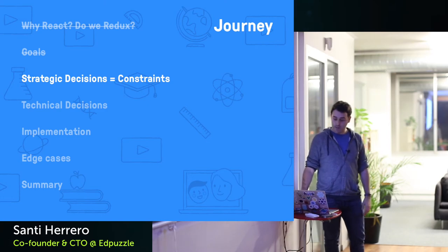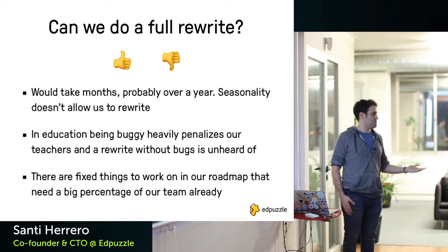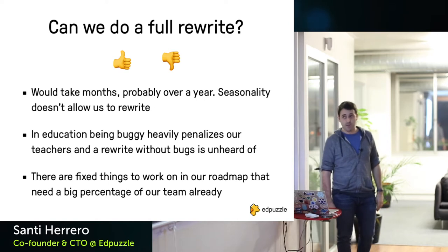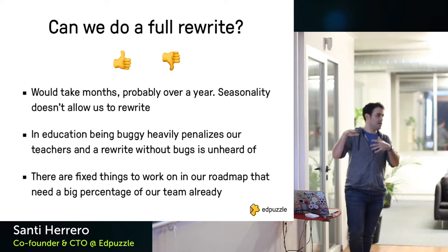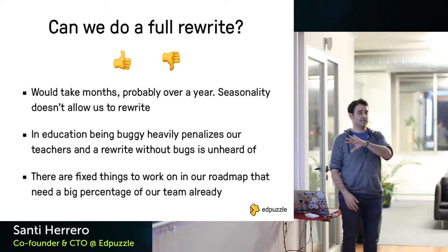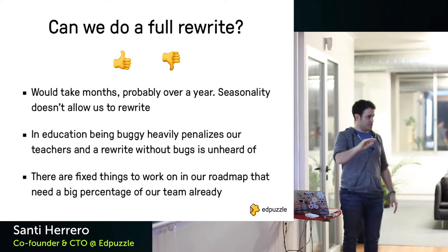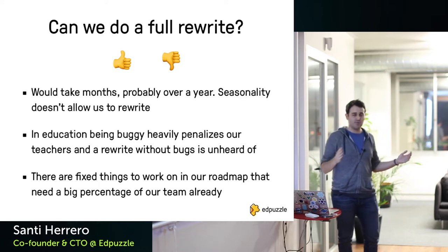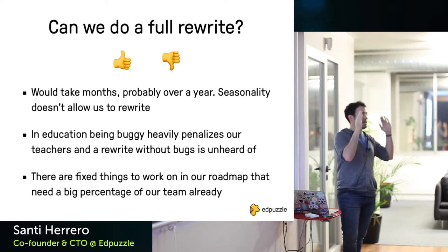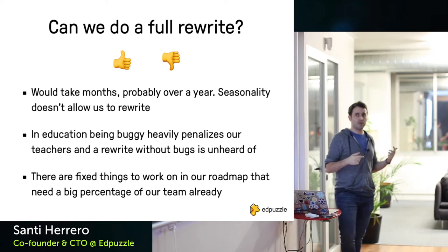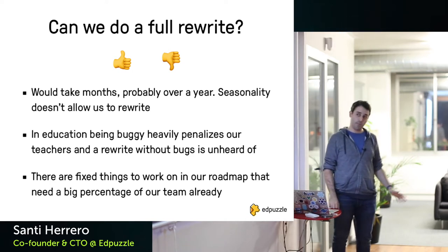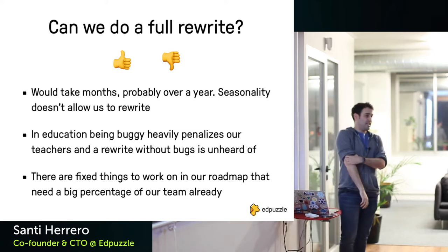Strategic decisions: two questions. First, can we do a full rewrite? We all know the answer is no. It would take months, and the seasonality of the education system doesn't allow us to stop for that long. We have heavy traffic during semesters — September to January, then January to June — and in summer only teachers use the platform, no students. There's no easy window to fit a full rewrite without impacting the school year, and every rewrite has bugs that would be very costly in an education context.